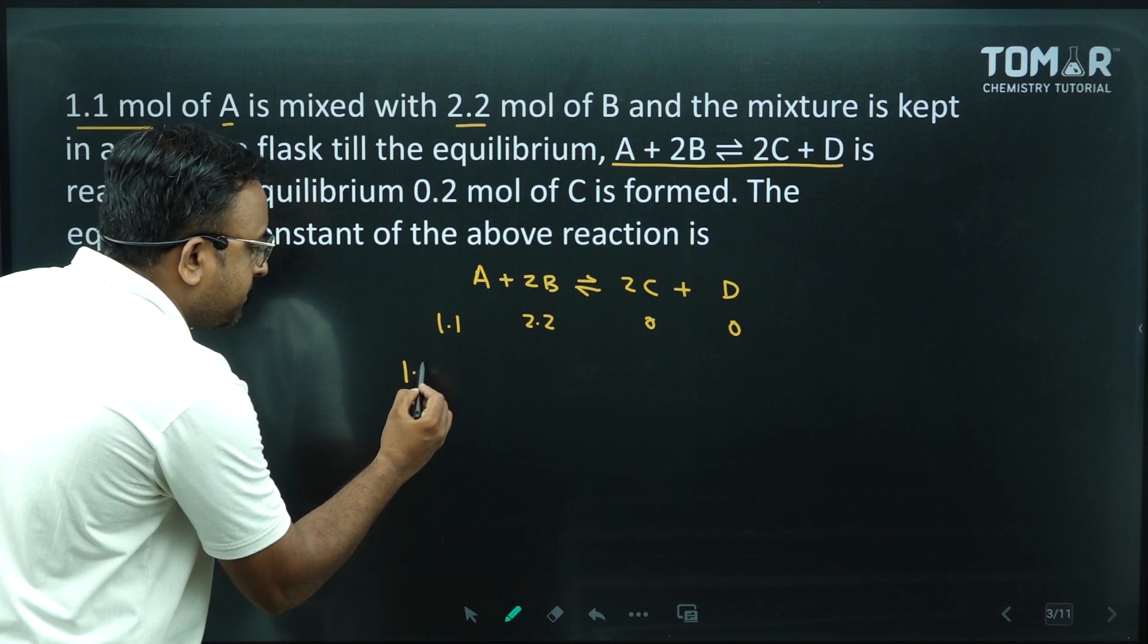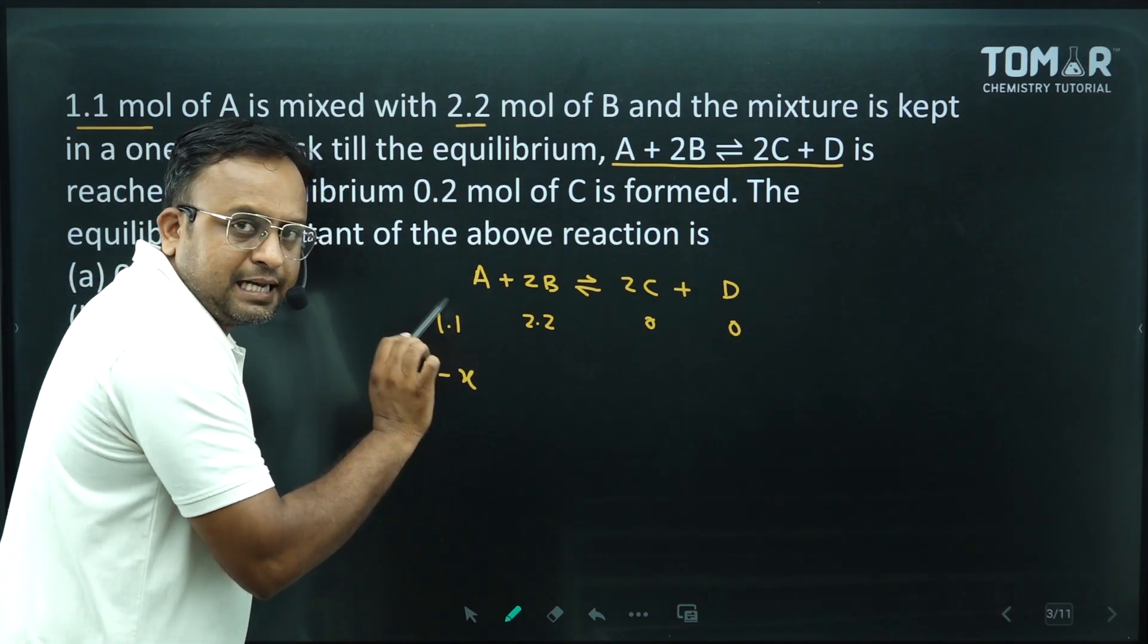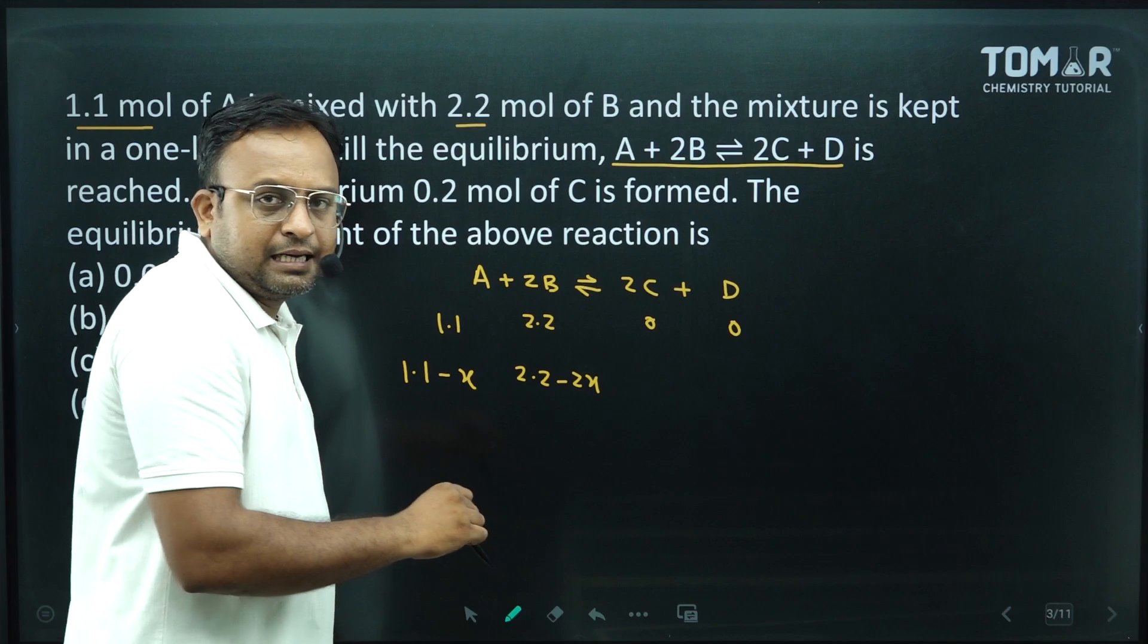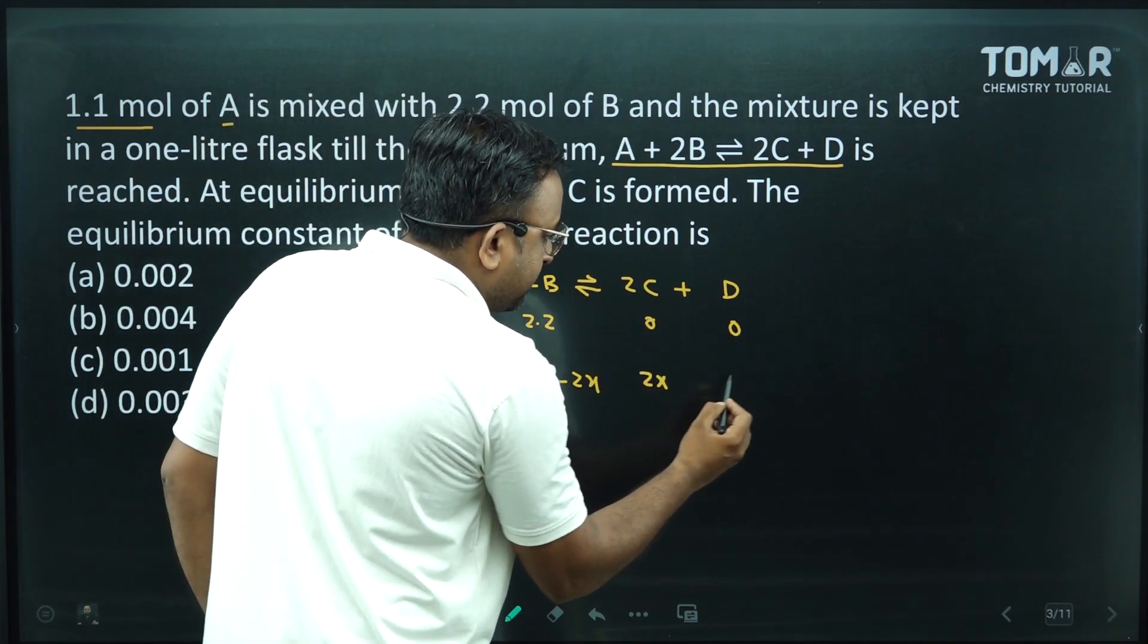Now see, 1.1 minus x. It's 1. 2.2 minus 2x. It's 2x. It's 2x and it's x.